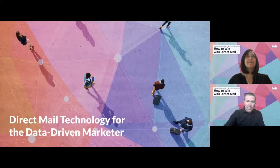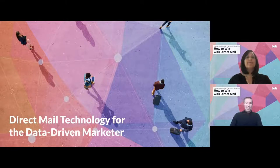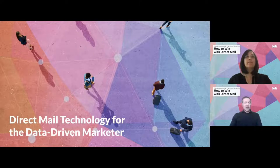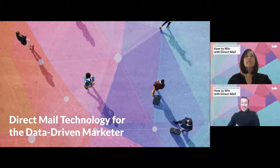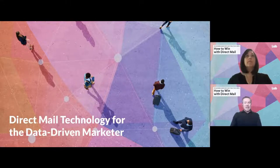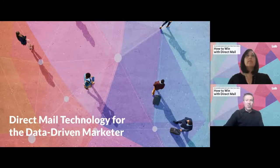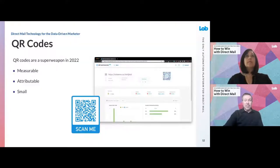The topic I'm most excited to speak about is really the technology that drives and enables all of this functionality — either within the Lob platform, on the roadmap for a future date, or something that can be enabled through a programmatic approach or a third-party vendor. The first thing I want to talk about is QR codes.